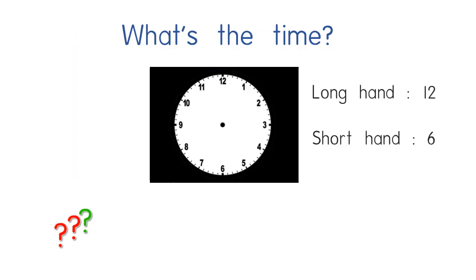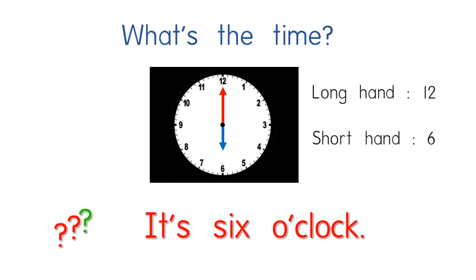Look at this. What if I put the long hand on number 12 and the short hand at number 6? What time is it? Can you tell me? Look here — the short hand shows the hour, and the long hand shows the minutes. So if like this, we call it it's 6 o'clock. It's 6 o'clock.